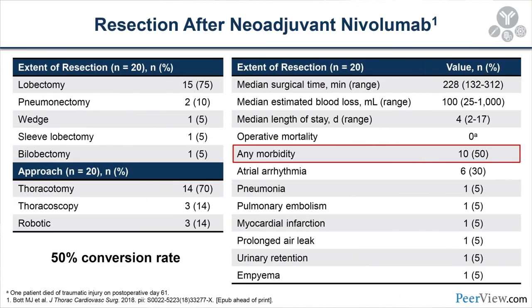Are complication rates higher after neoadjuvant immune checkpoint inhibition? Looking at larger studies, they're pretty similar to those seen after induction chemotherapy. The most common complications are atrial fibrillation, UTIs, pneumonias — and median length of stay in most trials has been four to five days, similar to typical lung cancer operations. There has been only one 30-day mortality across three published series and one in the NEOSTAR data. The New England Journal series performed lobectomy in 75% of patients, thoracotomy in 70%, thoracoscopy in 14%, robotics in 14%, with a roughly 50% conversion rate in that early study.